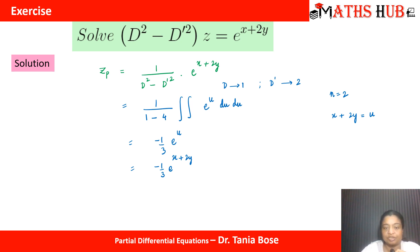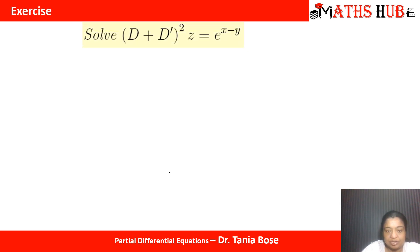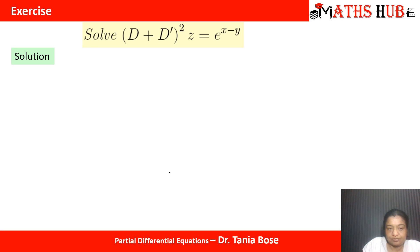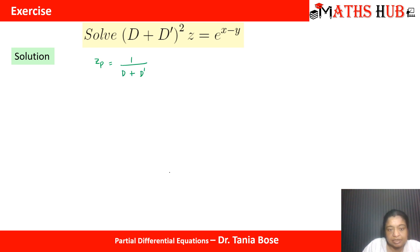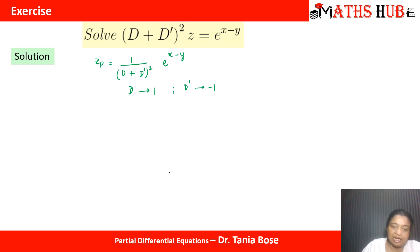The next question: solve (D plus D')² into z equals e^(x−y). So zp equals 1 upon (D plus D')² into e^(x−y). This is again a function of ax plus by. Replace D with 1 and D' with minus 1. When you replace D with 1 and D' with −1, 1 plus (−1) equals 0, so the case is failing. We multiply with x and take the derivative of the denominator with respect to D', giving 2(D plus D').